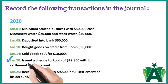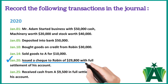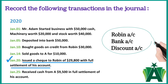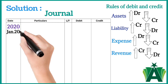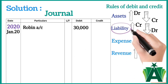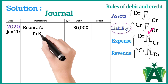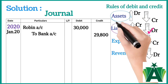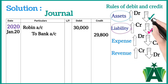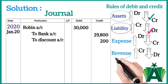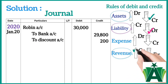January 20: Issued a check to Robin of $29,800 in full settlement of his account. In this transaction three accounts are involved: Robin account, bank account, and discount account. Robin account debit with $30,000 — reason: Robin account nature is a liability and decreases in business. Bank account credit with $29,800 — reason: bank account is an asset and decreases in business. Discount account credit with $200 — reason: discount is received and its nature is a revenue, increases in business.